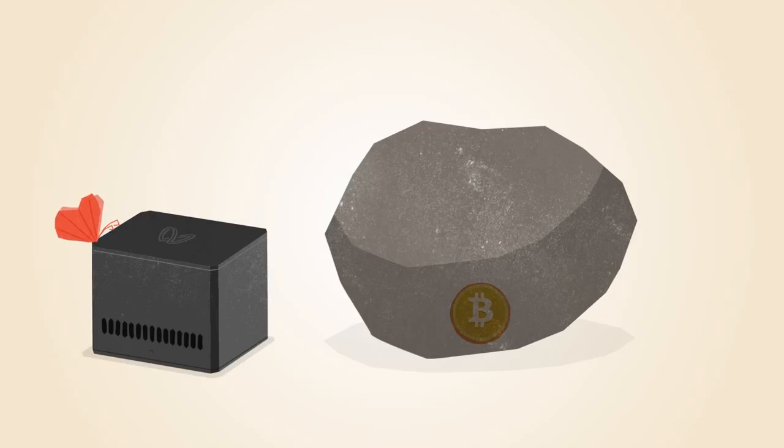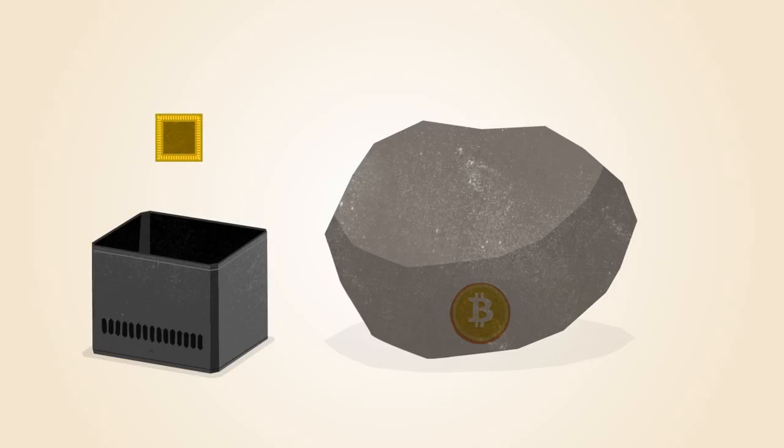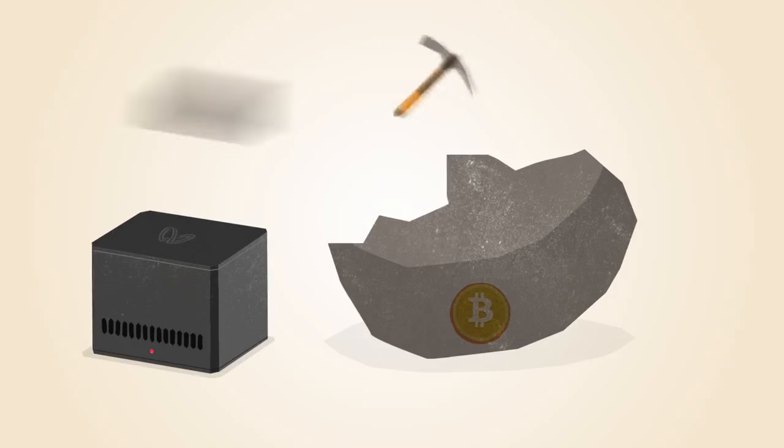The first commercial Bitcoin mining products included chips that were reprogrammed for mining Bitcoin. These chips were faster, but still power hungry.